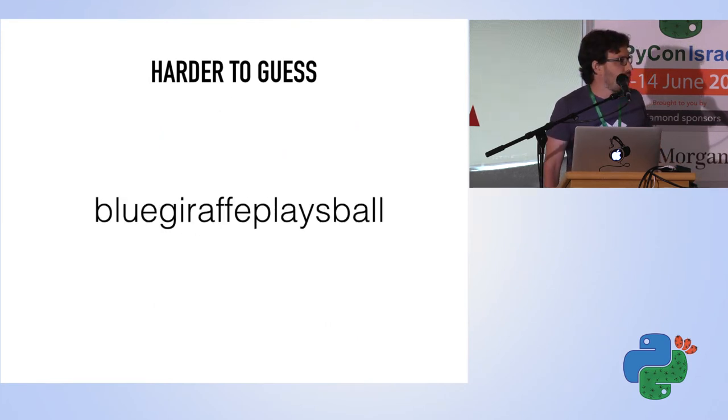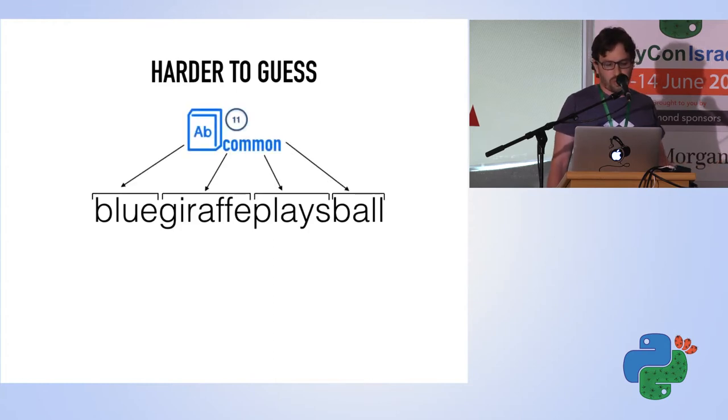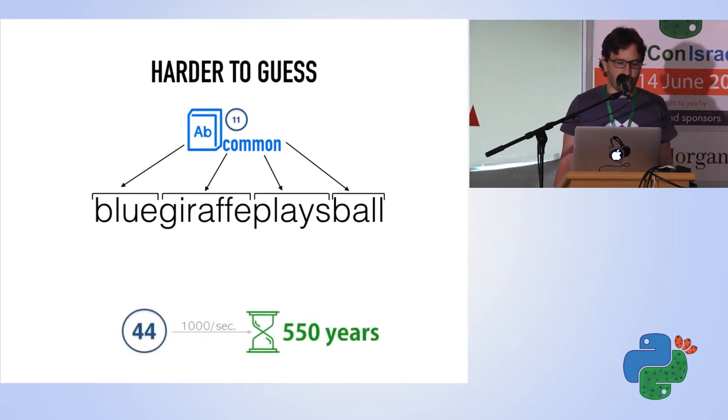What about the next one, blue giraffe plays ball? Here we have four words. These are common words in English, so we can use a small dictionary of size 2 to the power of 11. We can reserve 11 bits for each word. When we sum this all up, we get an entropy of 44.